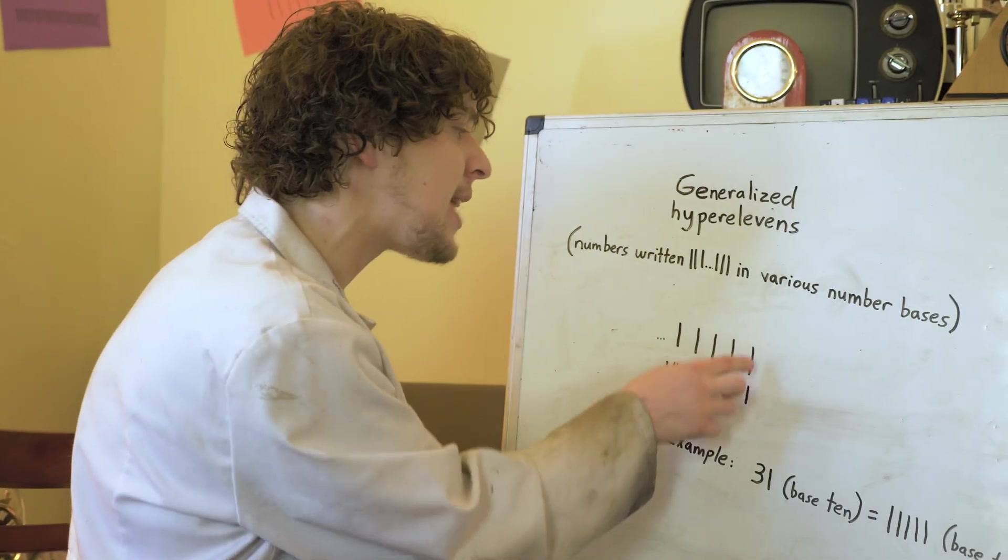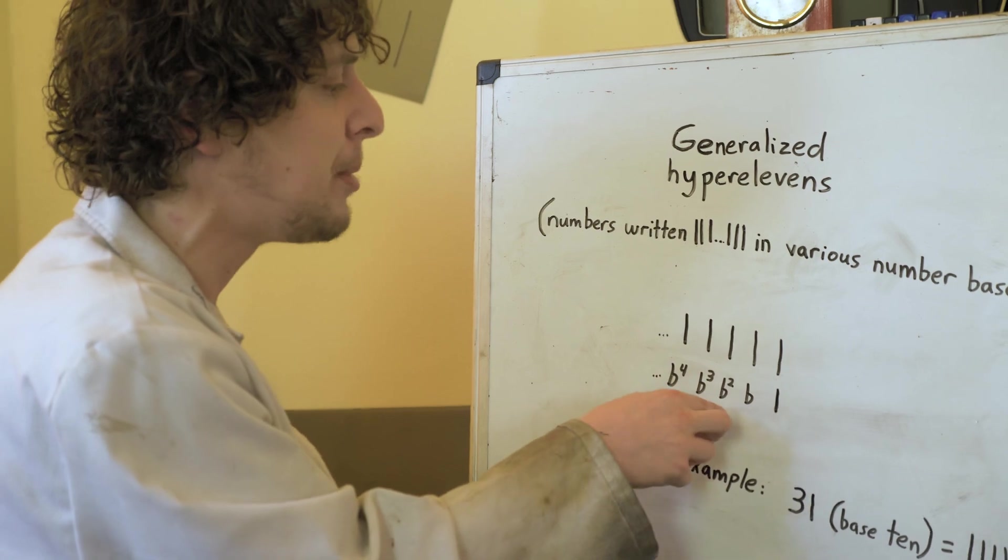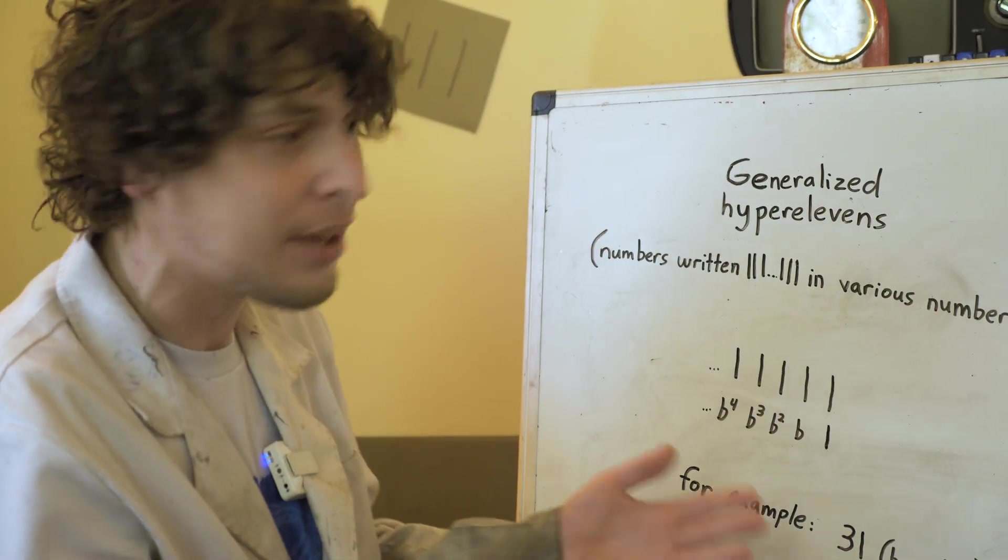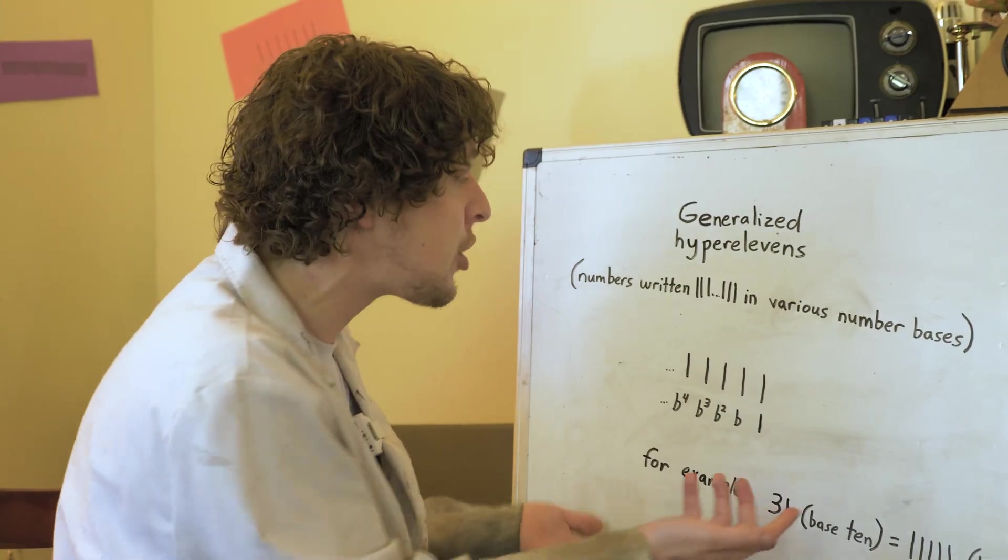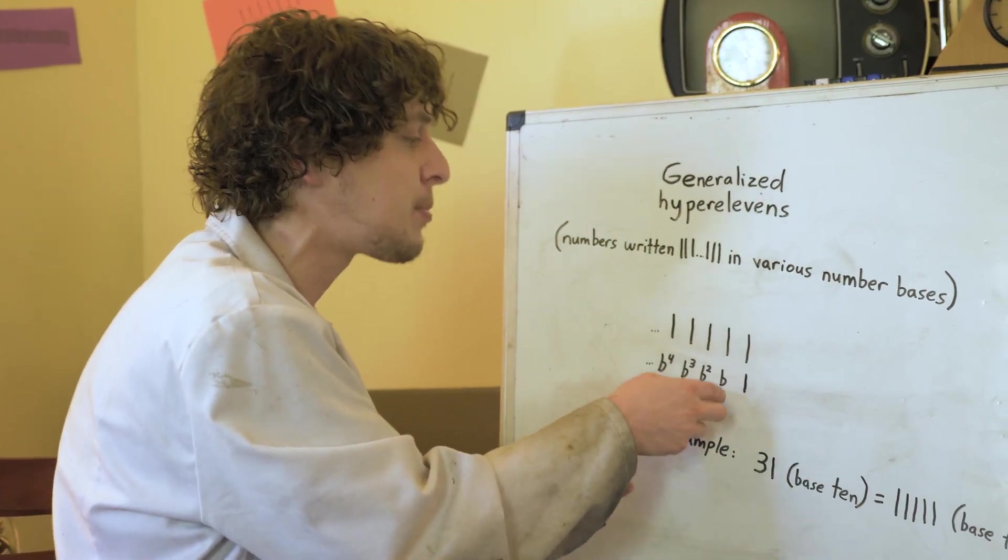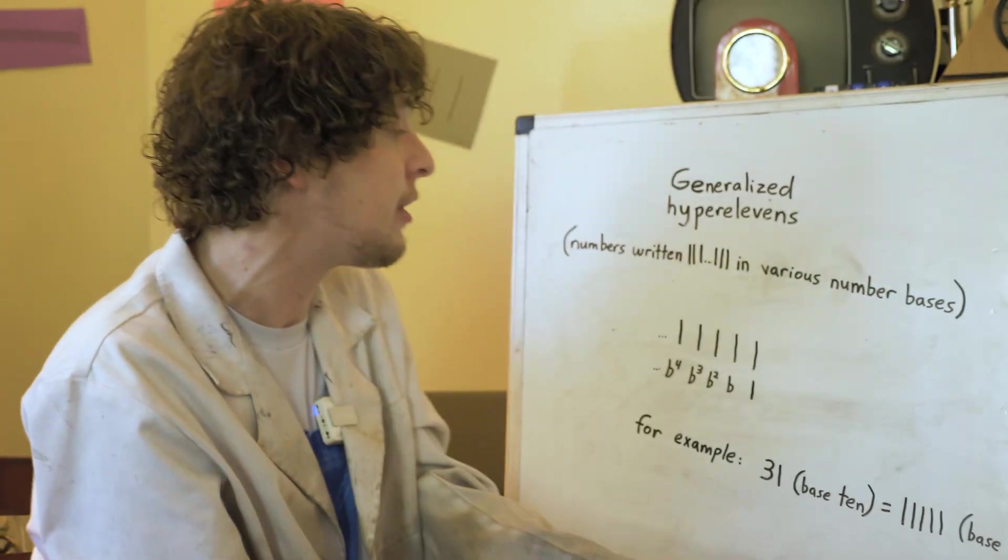But basically the quick story is that's our ones place, that's our b's place instead of 10s place, our b squared's place, and so on. So for a generalized hyper 11 where they're all ones, we're just adding one plus our base plus our base number squared and so on for however long our hyper 11 is.